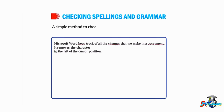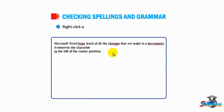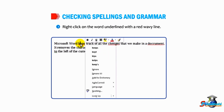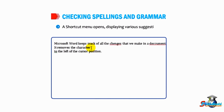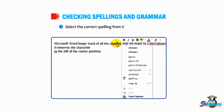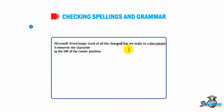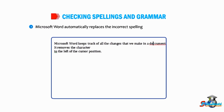A simple method to check the spelling of any word is as follows: right-click on the word underlined with a red wavy line. A shortcut menu opens displaying various suggestions. Select the correct spelling from the suggestions list, and Microsoft Word automatically replaces the incorrect spelling with the selected option.